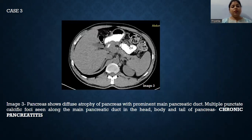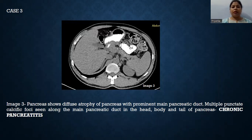In this case, the pancreas shows diffuse atrophy with prominent main pancreatic duct and multiple punctate calcific foci, which are seen along the main pancreatic duct in the head, body, and tail of the pancreas. These are suggestive of chronic pancreatitis.